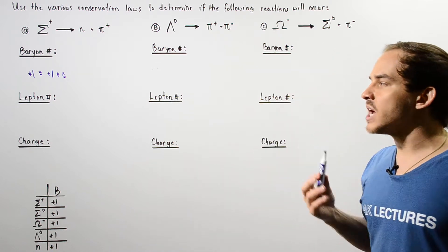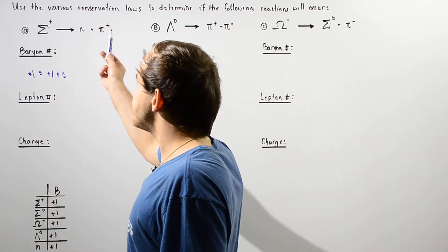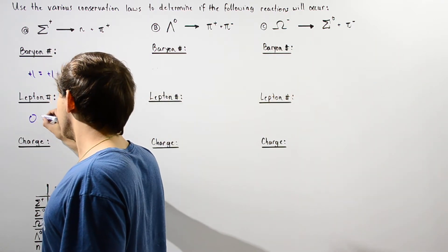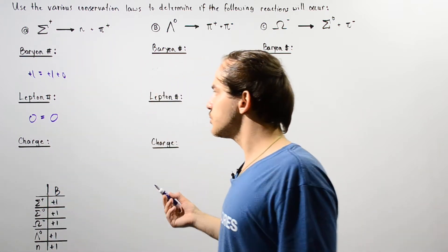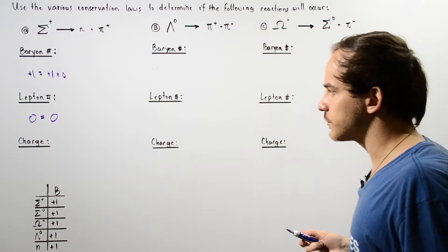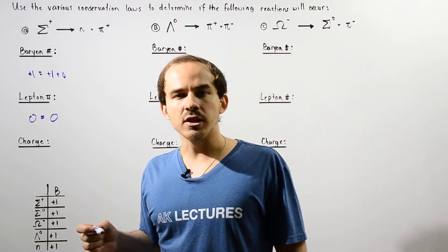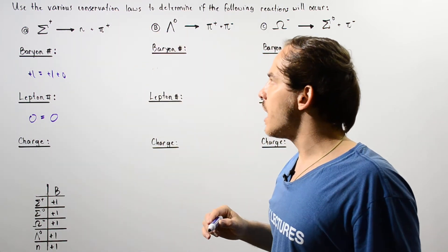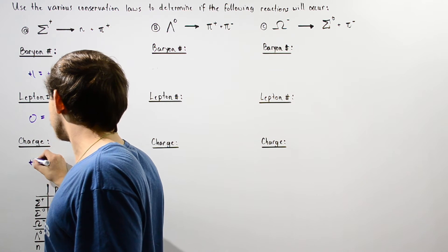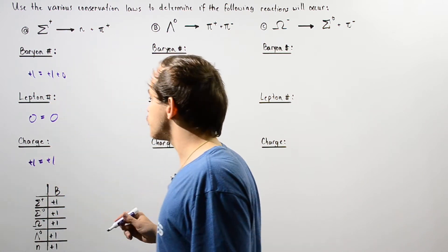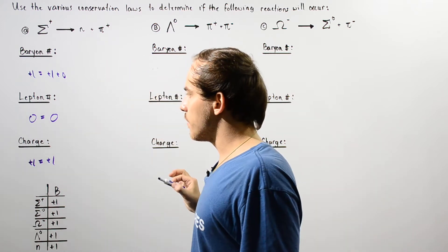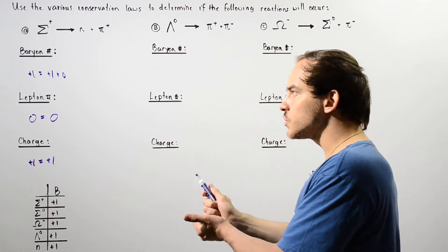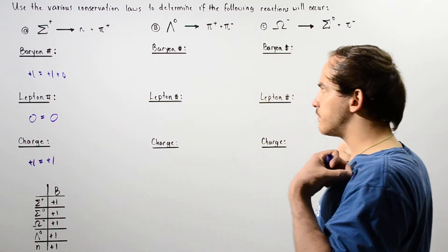What about the lepton number? None of these particles are leptons, so on the left side we have zero and on the right side we have zero — the lepton number is conserved. What about electric charge? We have a positive one on the sigma and a positive one on the pion, so positive one equals positive one. The baryon number, lepton number, and charge are all conserved. Assuming energy and momentum are also conserved, this reaction will take place.